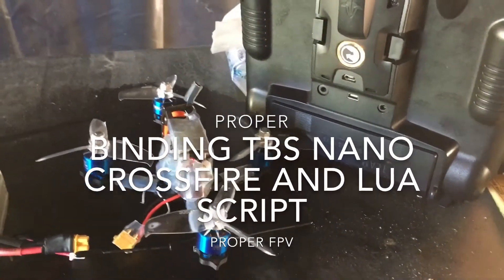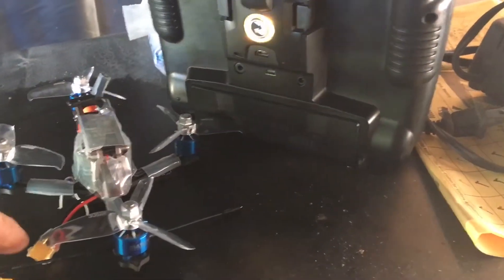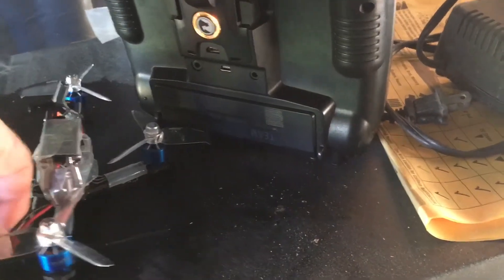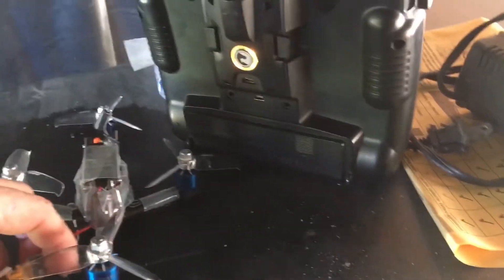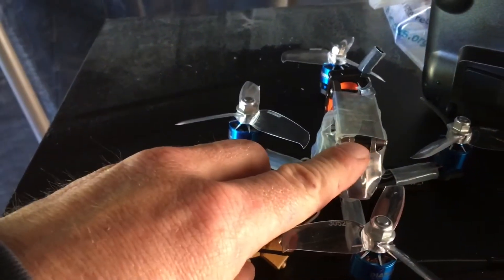What I want to explain is something that's a little bit confusing in the manual when you look up the TBS nano crossfire receiver. So what I'm going to do is I've got the crossfire in right here.